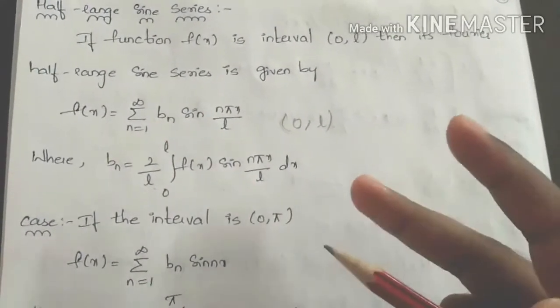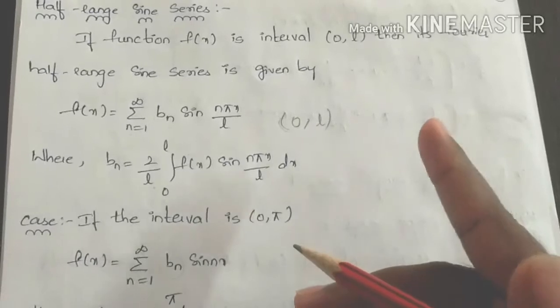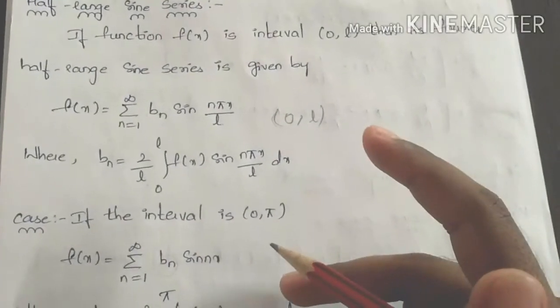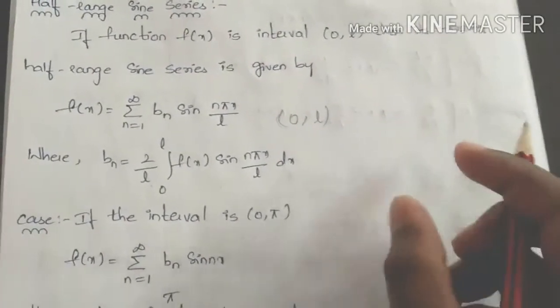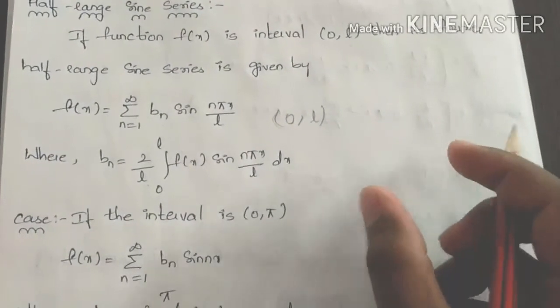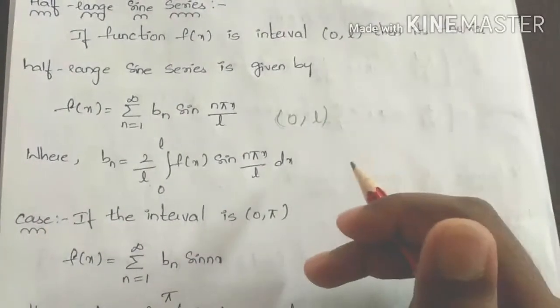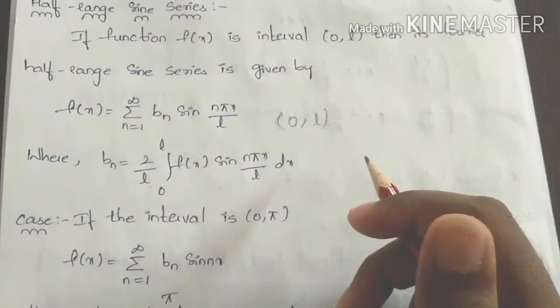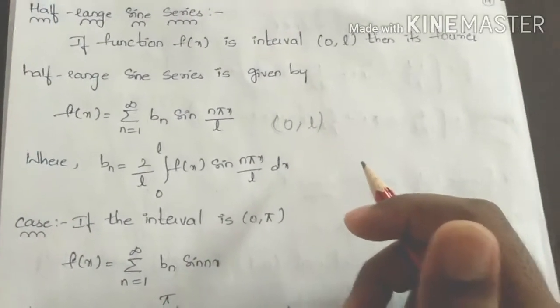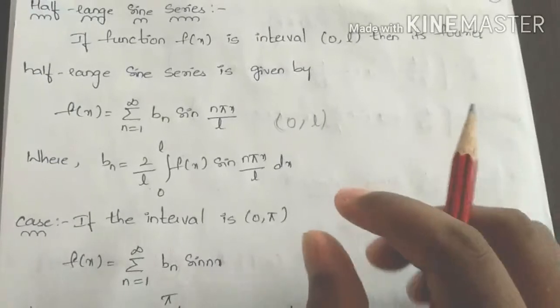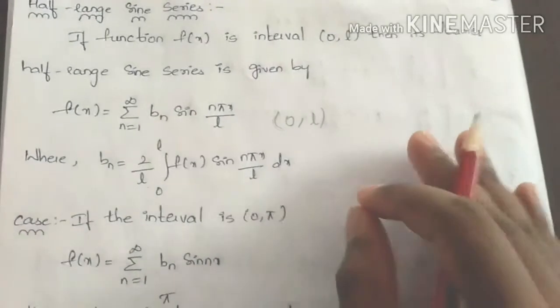We have two different formulas: one for the 0 to l interval and one for the 0 to pi interval. We need to decide the intervals and then solve the formulas accordingly. In this video, I will explain two or three problems.